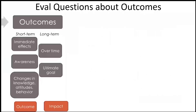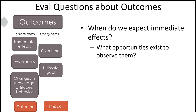As we move into evaluation questions about outcomes and get further along in our logic model, I think oftentimes this part is a little bit easier. Folks often have a lot of evaluation ideas about short-term outcomes — the things we expect to change based on our strategy implementation or activities. What are the changes in knowledge, attitudes, and behavior we're hoping to see amongst our participants? Questions we might consider include: when do we expect these immediate effects and what opportunities do we have to observe them? Which outcomes are timely for us, and when can we expect to look at our short-term outcomes?